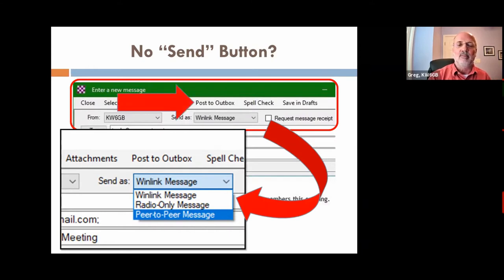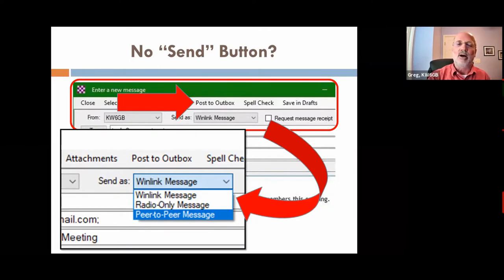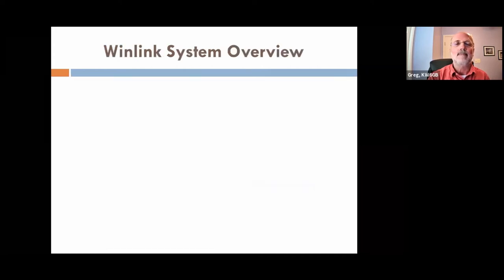Once you've selected the message type, you post the message to the Outbox — that's the closest thing to a send button you're going to have on this screen. After it's in the Outbox, we'll take a look at what options are available after that.